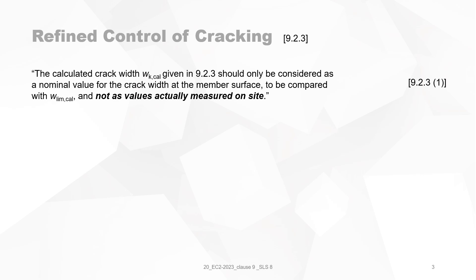In section 9.2.3.1 it is stated that the calculated crack width WK,PAL given in 9.2.3 should only be considered as a nominal value for the crack width at the member surface, to be compared with WLimit,PAL, and not as a value actually measured on site. So it is very clear that the calculated crack width is a nominal value and has nothing to do with the real value you measure on site.